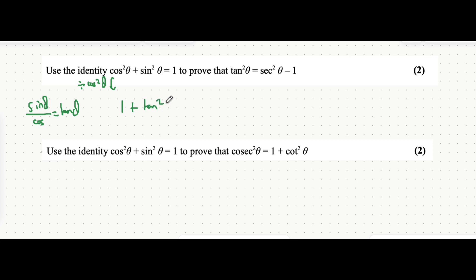So we can write 1 plus tan squared theta is equal to 1 divided by cos squared theta, which would be sec squared theta. And that's this expression that's already written out on the right side.